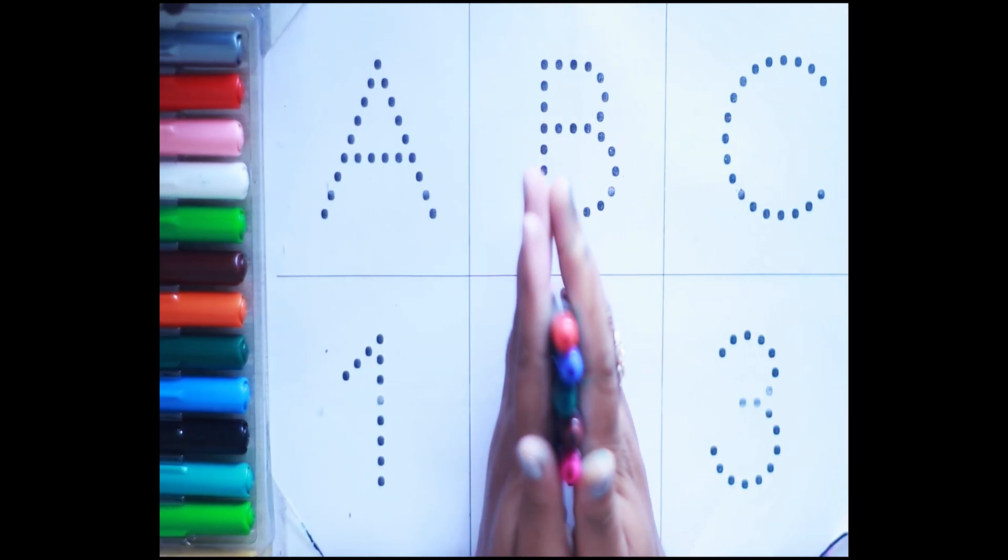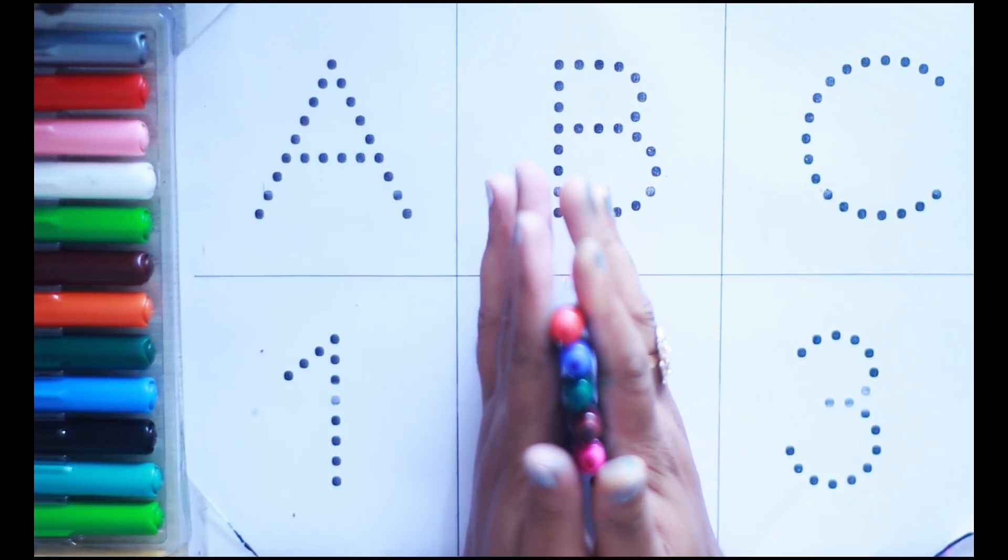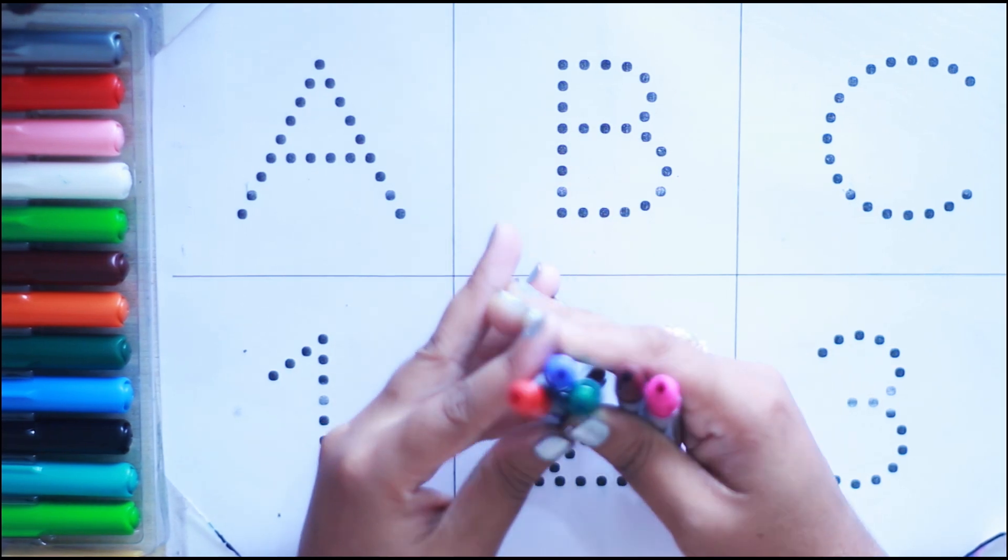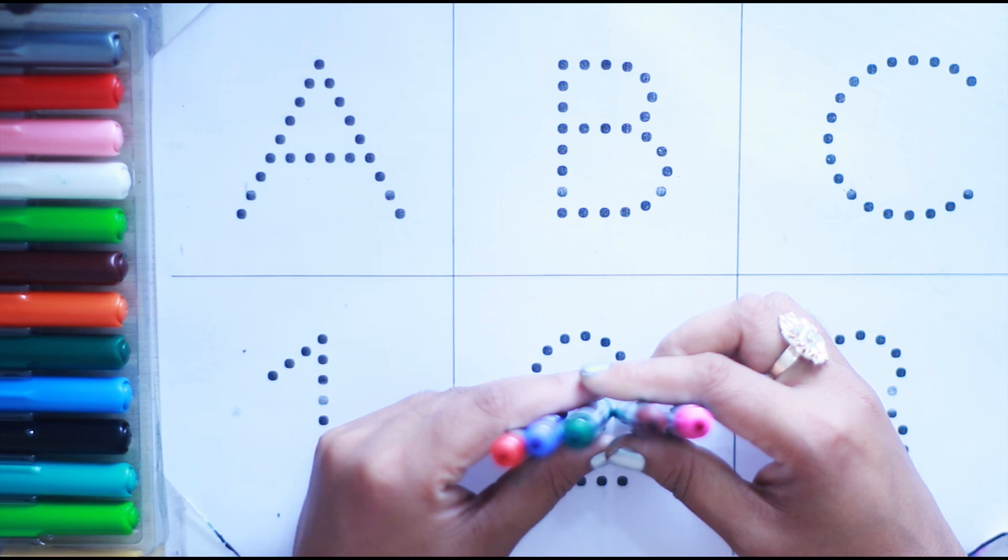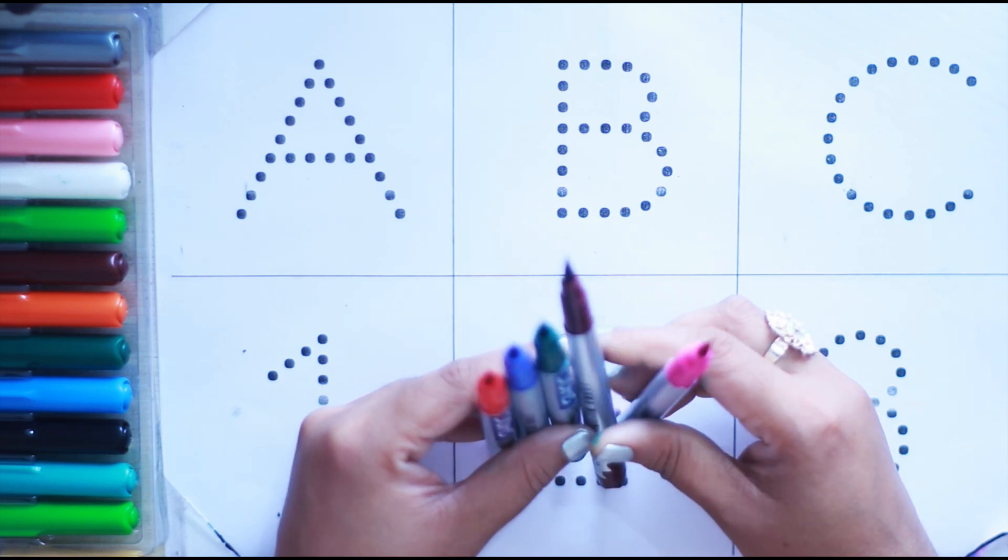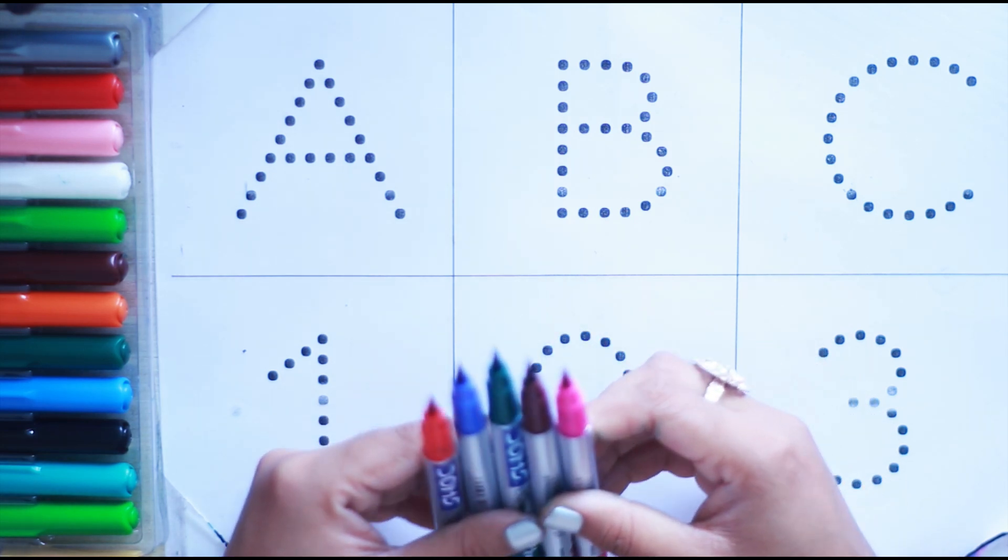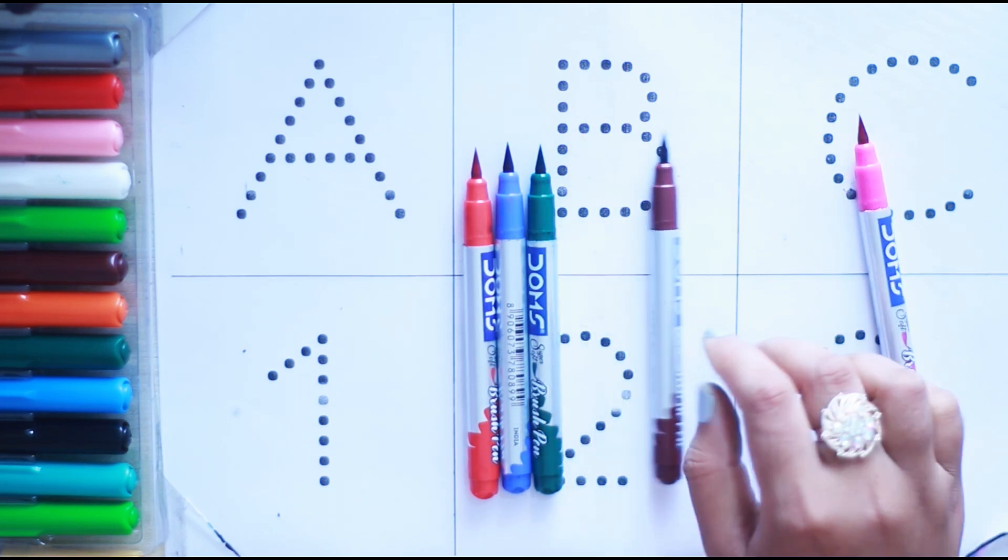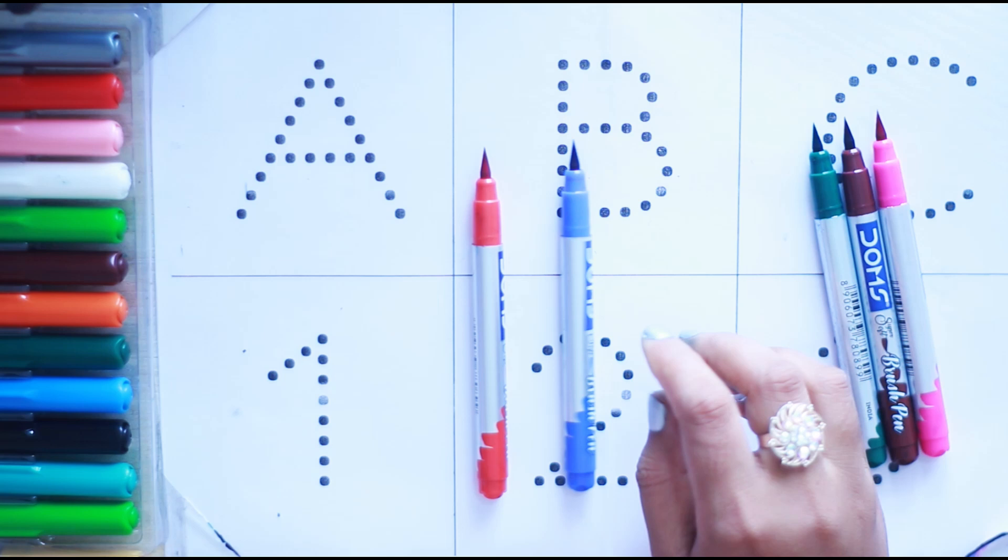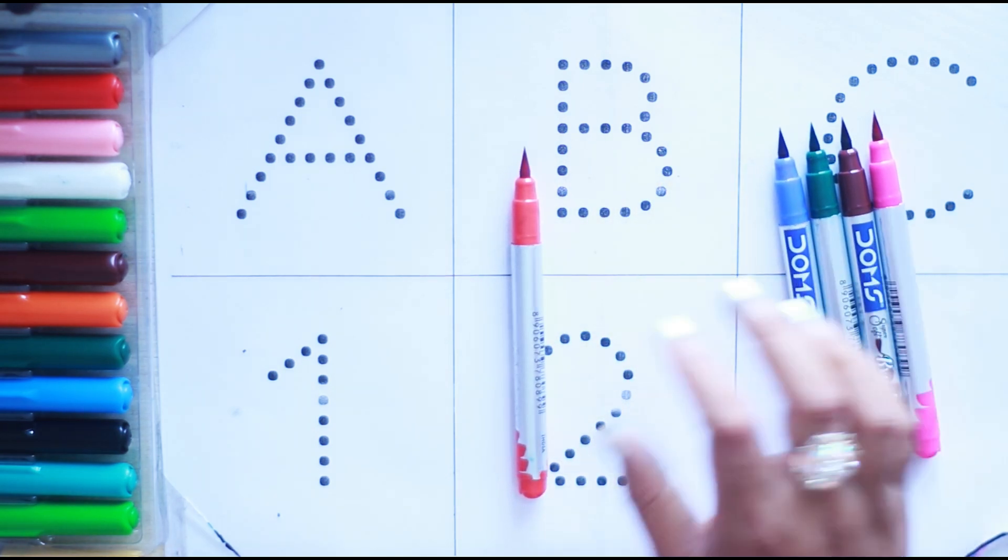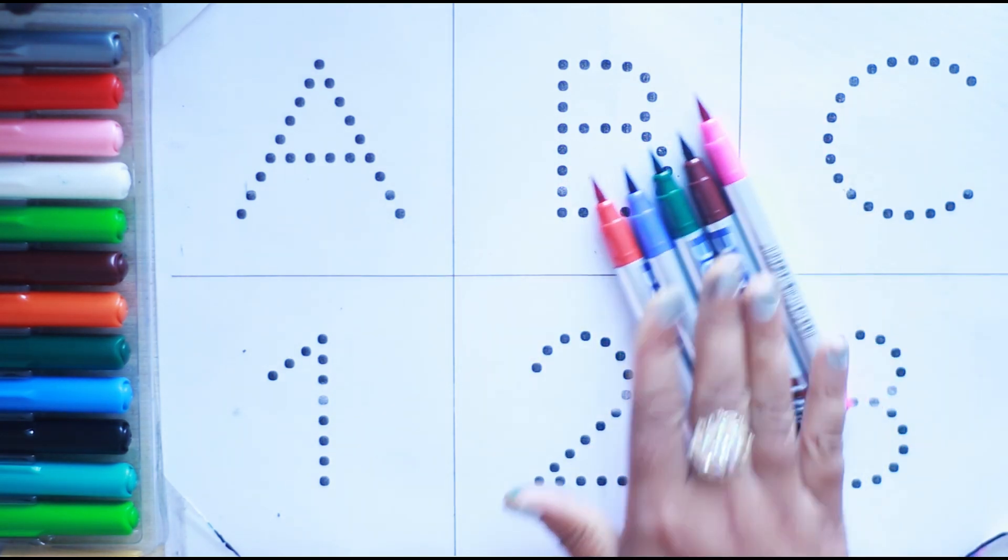Hello kids, welcome to another new video. Today we will learn ABC and one two three with your favorite YouTube Kit Channel. Let's start! Some colors: pink, brown, green, blue, and red. Let's start with brown color.